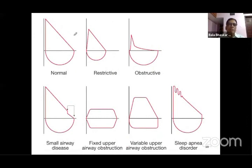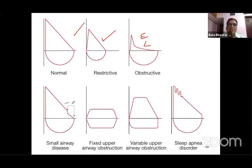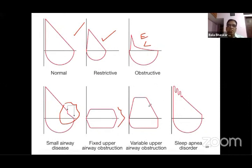A normal loop has a characteristic shape. A restrictive loop is like a miniature version of normal — everything is reduced. In obstructive disease, the expiratory limb becomes concave. Small airways disease is reflected towards the end of the expiratory limb. Fixed upper airway obstruction shows flattening of both inspiration and expiration. Variable upper airway obstruction — such as in sleep apnea — affects inspiration more than expiration, flattening the inspiratory limb.